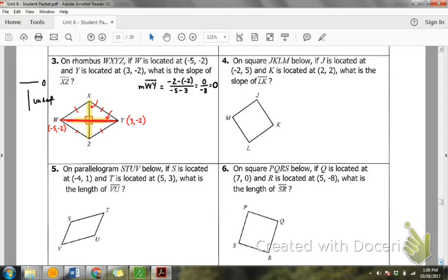So the slope, if WY slope is 0, that means the slope of XZ has to be undefined. Good job, Abby. So I'm going to say the slope of XZ is undefined, because it's the opposite reciprocal of 0. All right.